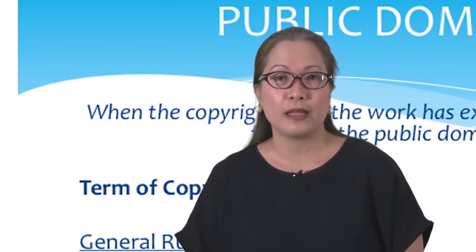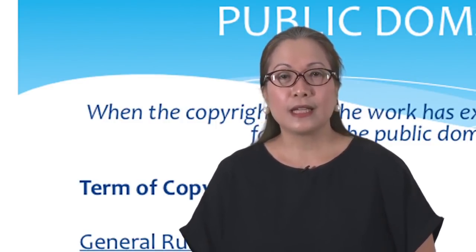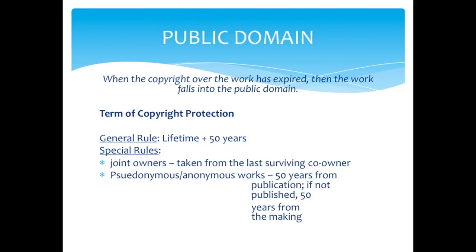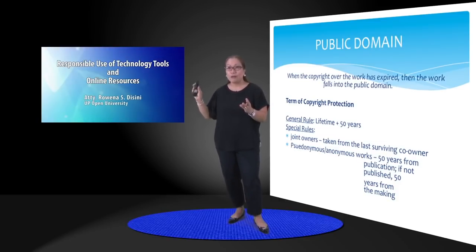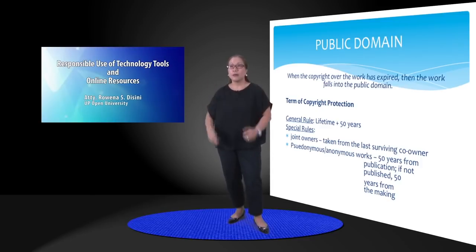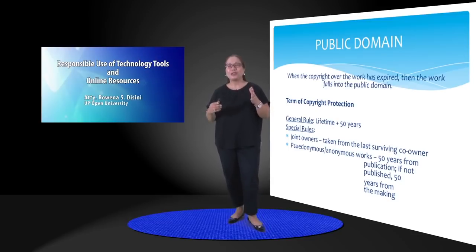There are two exceptions to copyright: one is public domain and the other is fair use. What does public domain mean? This simply means that when the copyright of the work has expired — and yes, there is an expiration of copyright — the work falls into what we call the public domain. Copyright protection expires as a general rule at the lifetime of the creator plus 50 years. If Julie created a poem during her lifetime, she has copyright, but when she dies her heirs will have copyright over that same work for 50 years. After 50 years from her death, that poem now becomes public domain — free to use without asking permission.